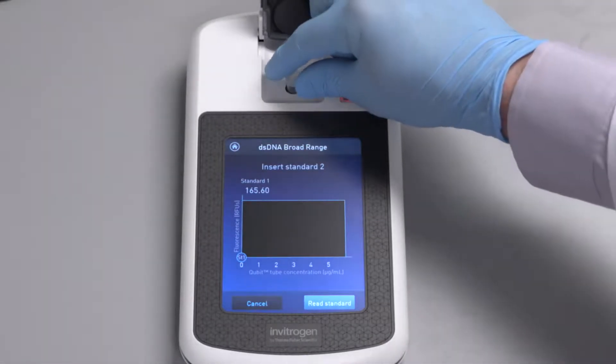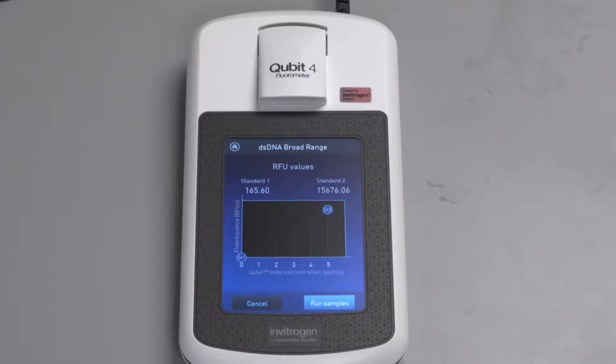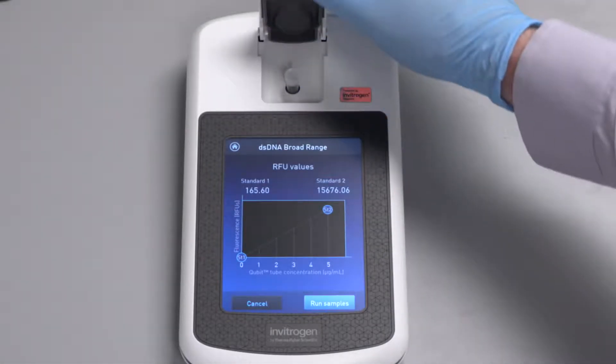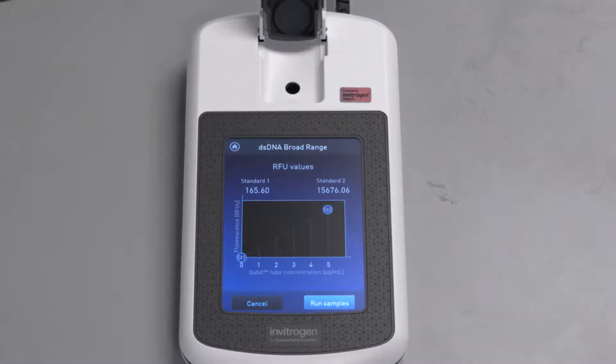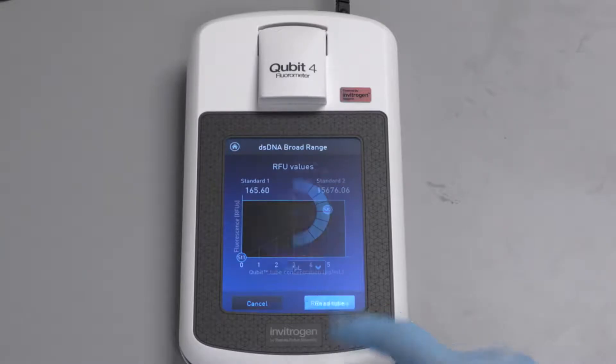Dye binding is selective for DNA or RNA and provides concentration information even in the presence of copurified contaminants. There are many kits compatible with the Qubit 4 fluorometer, including RNA IQ, which provides information about RNA integrity.